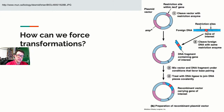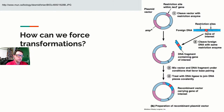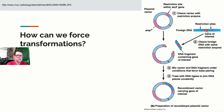The typical selectable marker is antibiotic resistance. You take a bunch of bacteria, try to introduce the plasmid, then grow them on plates containing an antibiotic — in this case, ampicillin. The antibiotic kills all bacteria that did not pick up the plasmid. Only bacteria that were successfully transformed survive, which makes identifying successful transformants much easier.